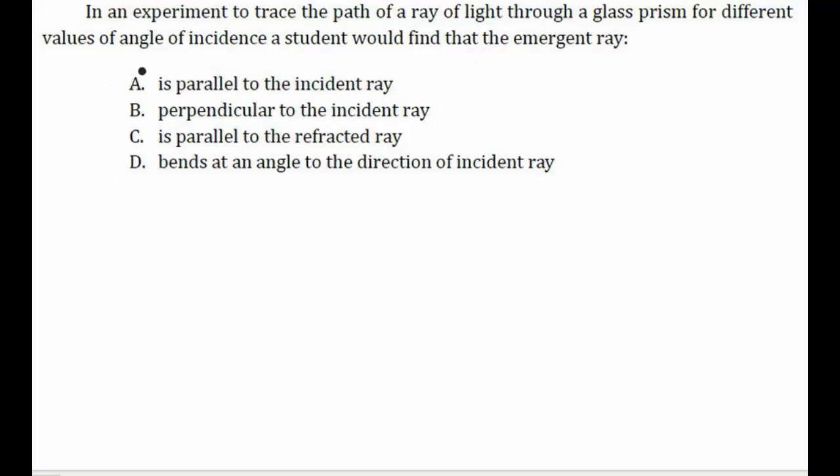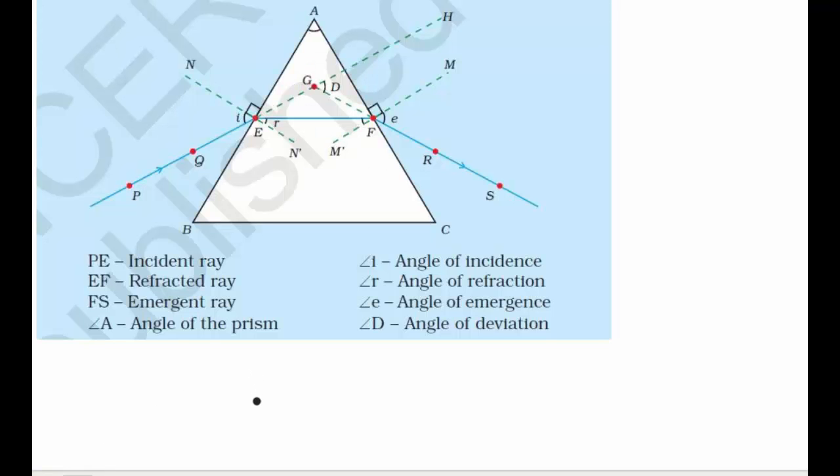So let's see how a prism refracts a ray of light. This is the figure showing the refraction of light through a prism. First of all, an incident ray is incident on a surface of the prism. Then this ray gets refracted at the surface and moves forward.